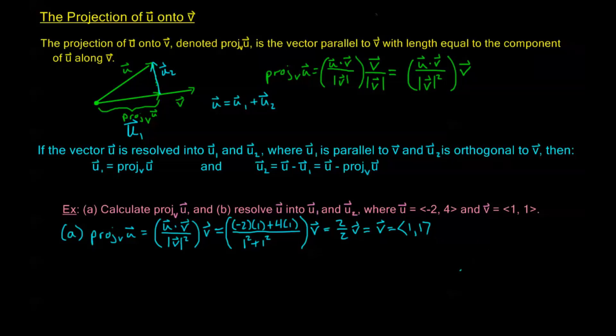We have a picture that looks something like this, where this is my v and this is my u. So the projection of u onto v is just v itself. Now for part (b), we already have u₁, where u₁ is the projection, so u₁ is going to be ⟨1, 1⟩. To find u₂, u₂ is going to be the vector u minus the vector u₁, because we know that u₁ plus u₂ equals u.